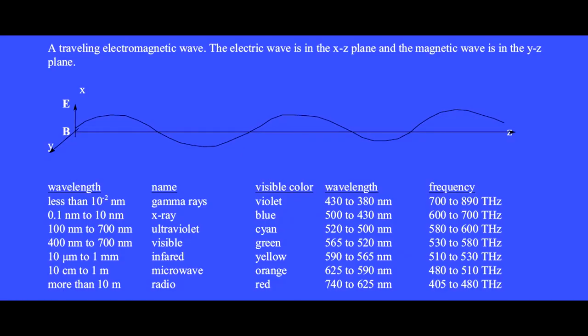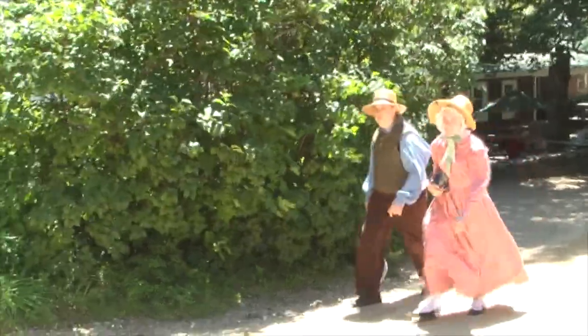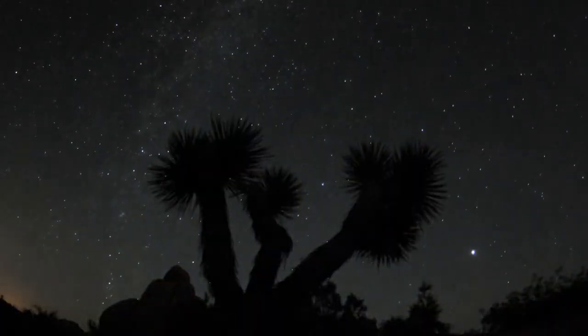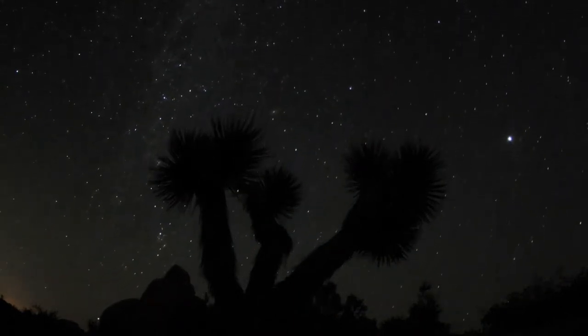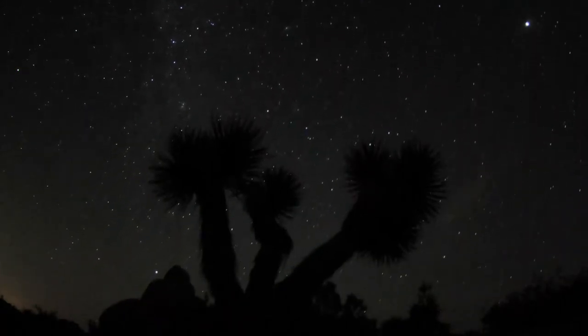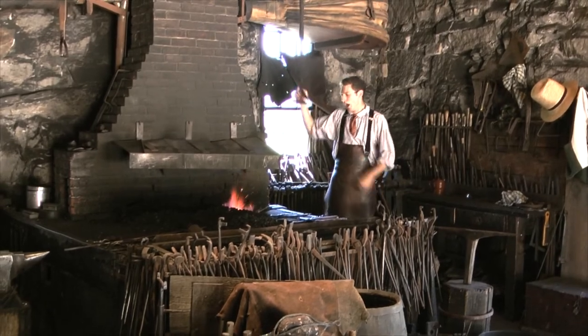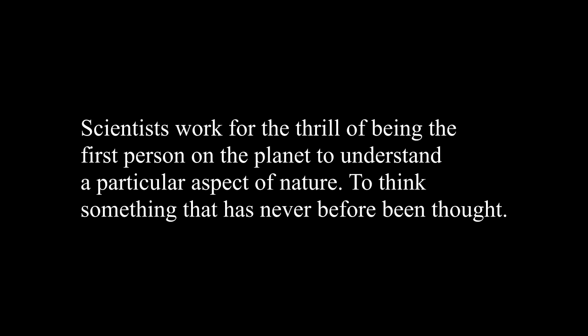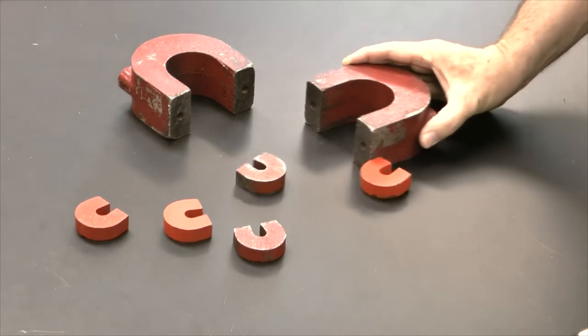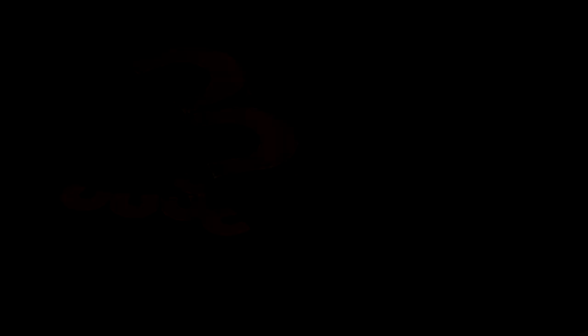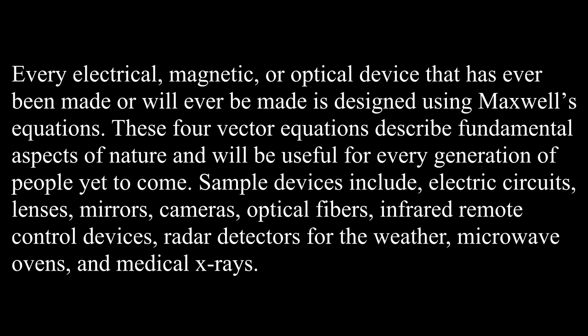Colors of light that our eyes are unable to see include infrared, ultraviolet, radio, and x-ray. The night of his discovery, while strolling in the park and gazing at the stars with his fiancée, Maxwell told her that he was the only person on the planet at that moment who understood the true nature of starlight. Scientists work for the thrill of being the first person on the planet to understand a particular aspect of nature — to think something that has never before been thought. Maxwell showed that electricity and magnetism are each a different aspect of a single electromagnetic force. Every electrical, magnetic, or optical device that has ever been made, or will ever be made, is designed using Maxwell's equations.